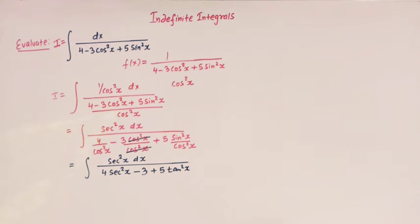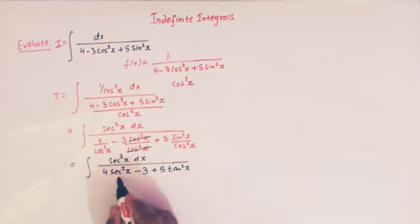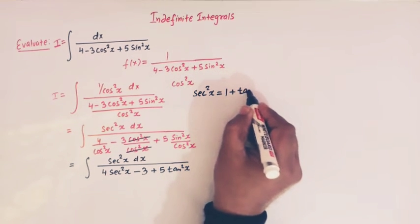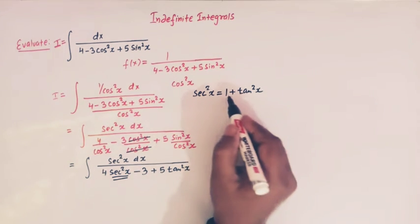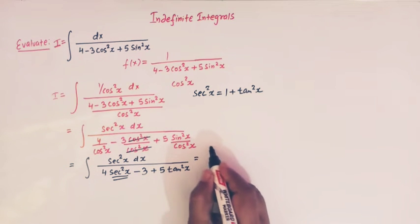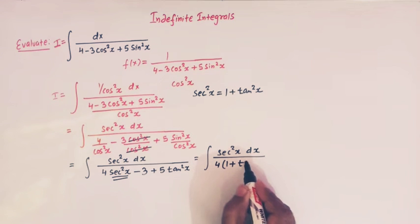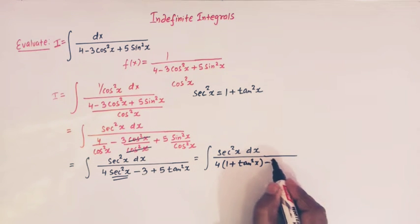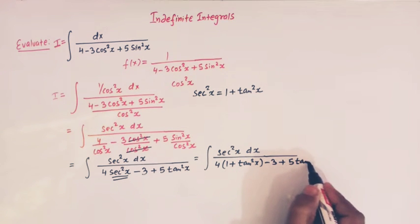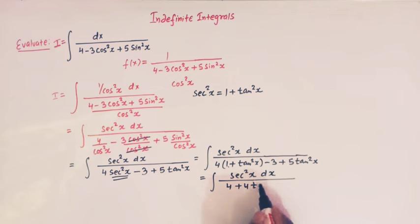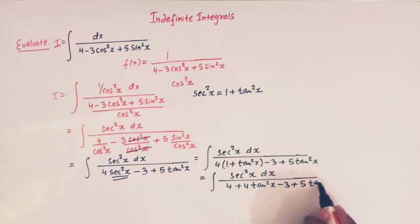Because tan x is sin x over cos x. Now we use an important trigonometric identity: sec squared x equals 1 plus tan squared x, and we substitute 1 plus tan squared x for sec squared x in the denominator. So we now have sec squared x dx over 4 times (1 plus tan squared x) minus 3 plus 5 tan squared x.